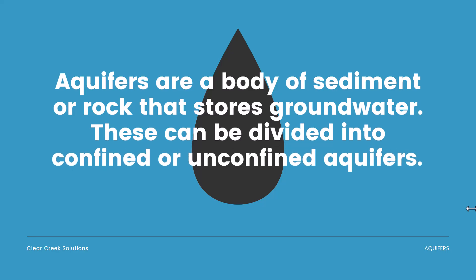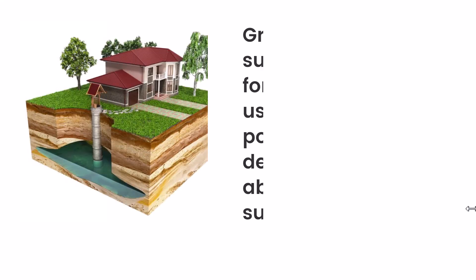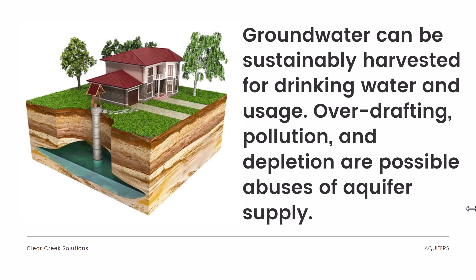Aquifers are a body of sediment or rock that stores groundwater, and these can be divided into confined or unconfined aquifers — typically the two categories when we're defining what an aquifer is. Groundwater can be sustainably harvested for drinking water and usage. You can see on the diagram that in these soil and rock layers, we do have water stored, and a lot of times drinking water is harvested from these layers.